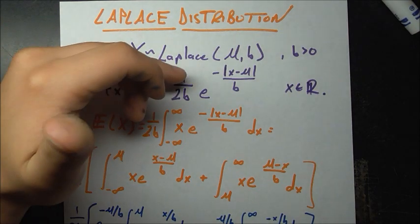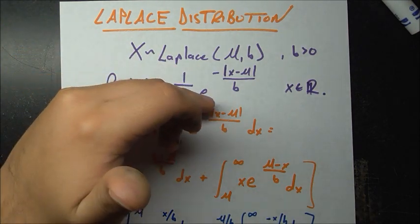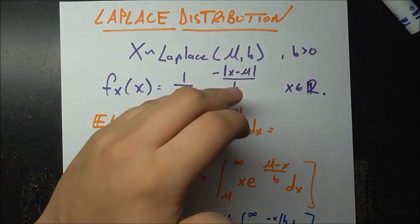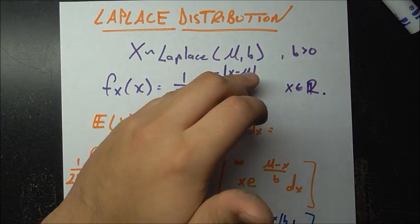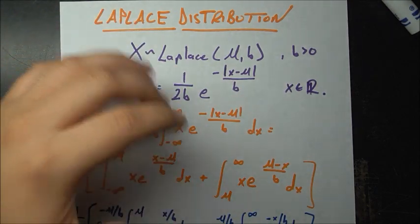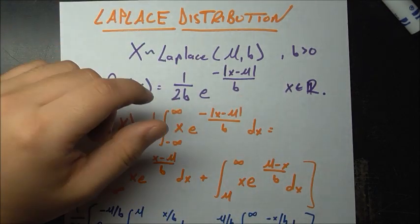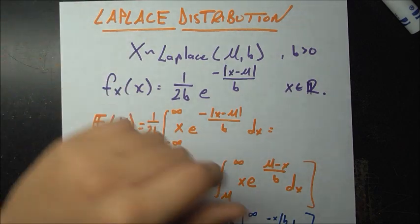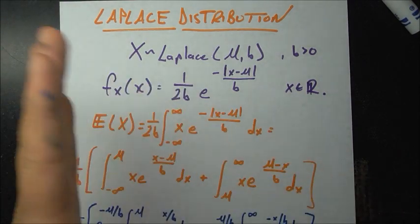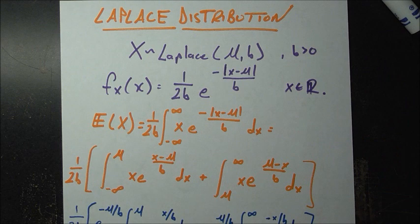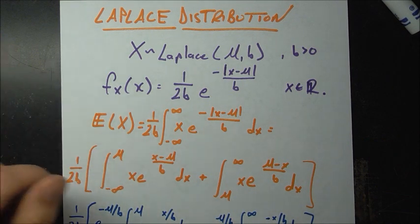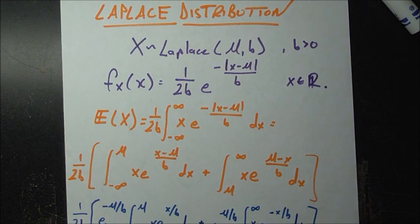The PDF is given by 1 over 2b, times e to the power of negative absolute value of the quantity x minus mu, all divided by b. Since there is no zero-otherwise term, we assume x can be anything on the real line, from minus infinity to infinity. It is similar to the normal distribution in that you can plug in any value of x you want.